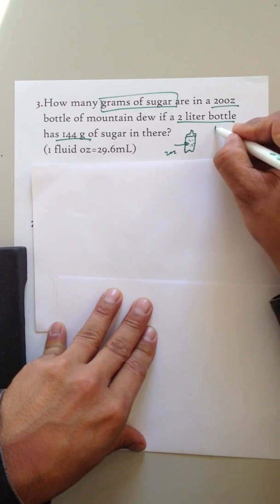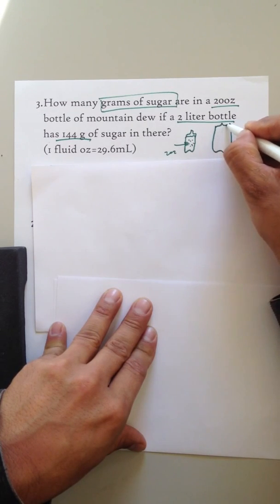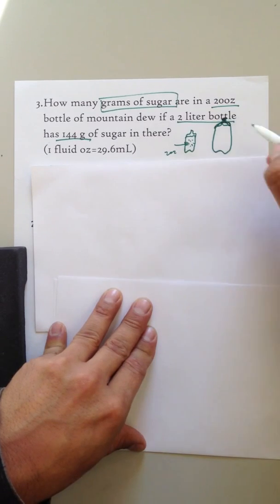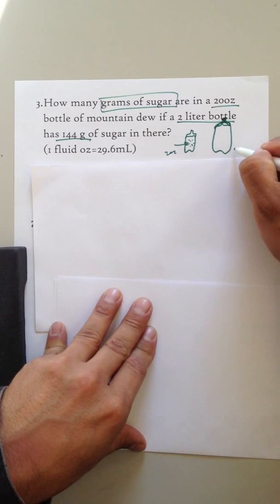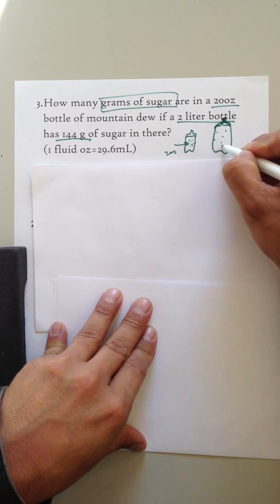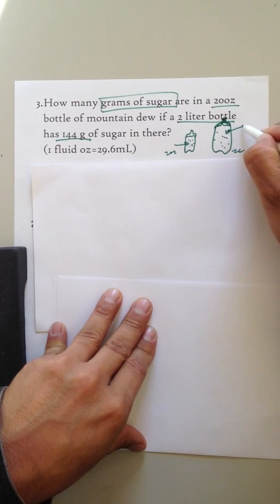If a 2-liter bottle, big ol' ugly bottle, that's not a bottle, very artistically rendered, cubist. Anyway, this is a 2-liter bottle, and in there we know that there is 144 grams of sugar.